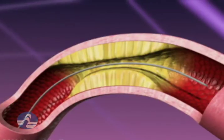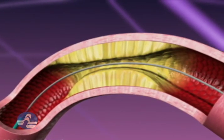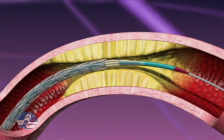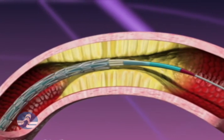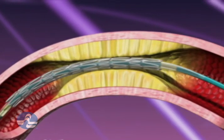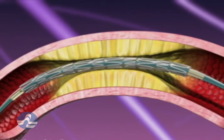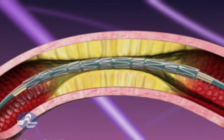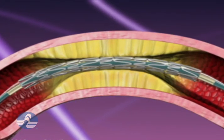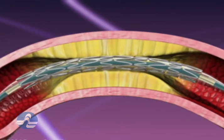Through this same catheter, if there is a blockage, we're able to insert a balloon and inflate the balloon at the site of the blockage. That's called angioplasty, and typically we will also place a stent.